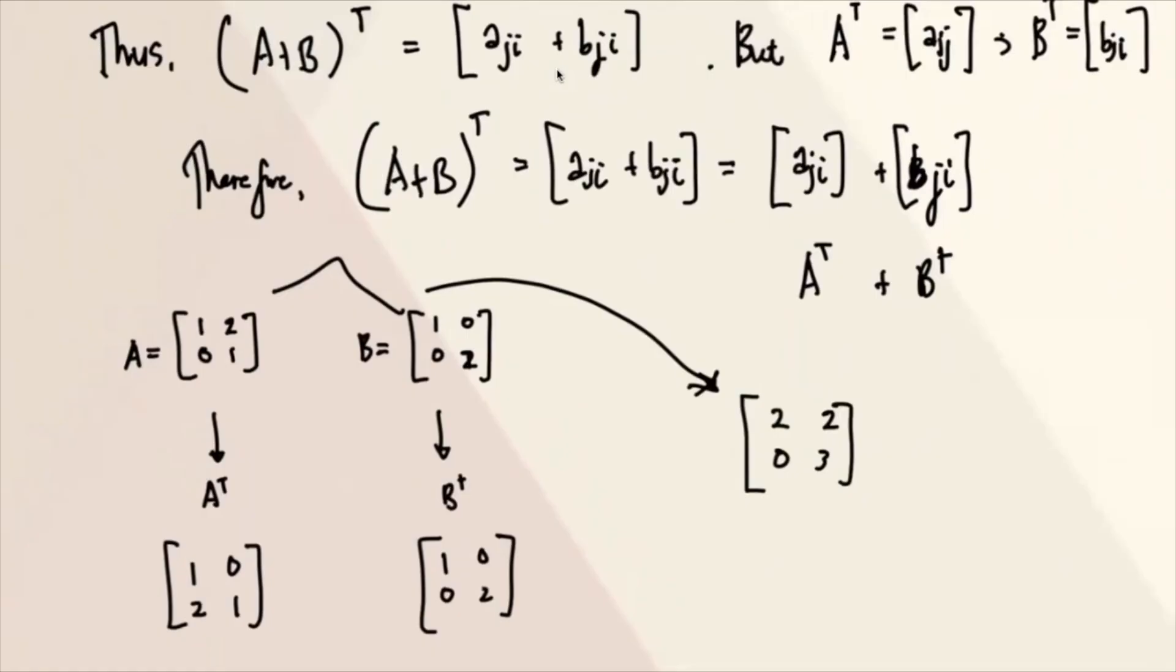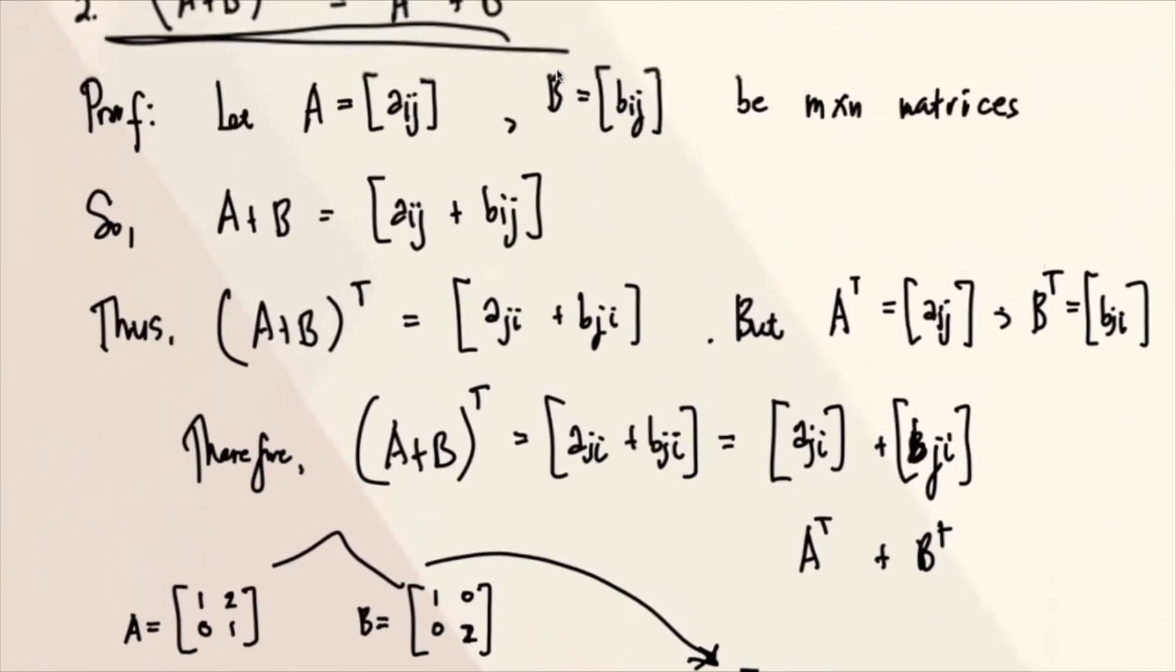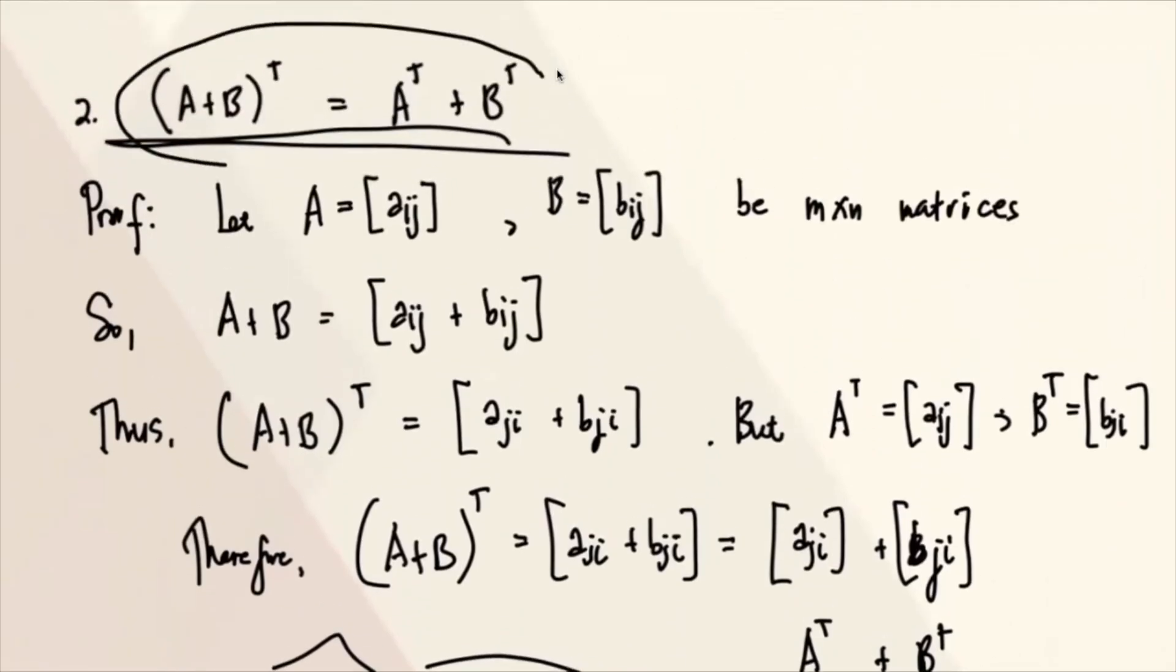But if you take the transpose of this, this is 2, 2, 0, 3. Which is actually the sum of this. Yeah. So therefore, this property is true.